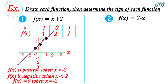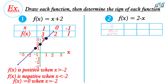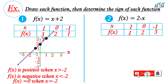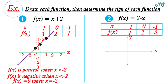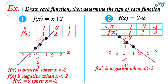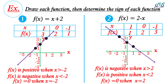Second, f(x) = 2 - x. f(1) = 2 - 1 = 1; f(0) = 2 - 0 = 2; f(-1) = 2 - (-1) = 3. Plot the points (1, 1), (0, 2), (-1, 3) and draw the line. At x = 2, f(x) = 0. f(x) is negative when x > 2, and f(x) is positive when x < 2, and f(x) = 0 when x = 2.